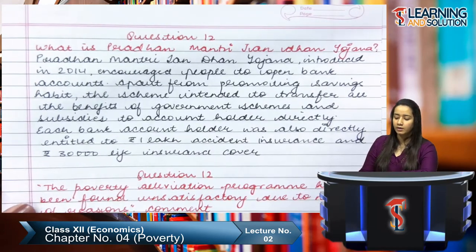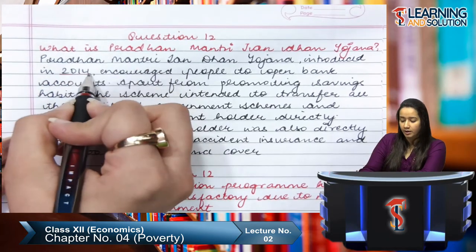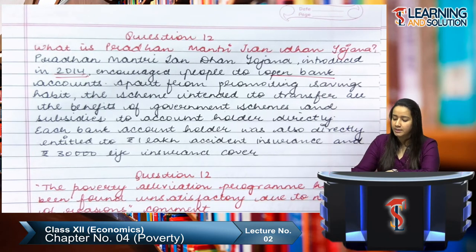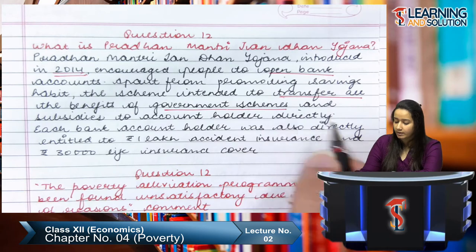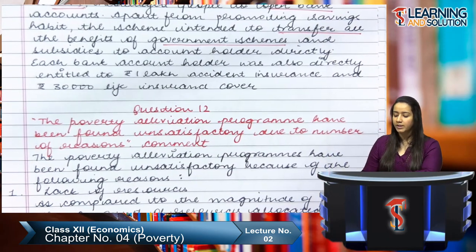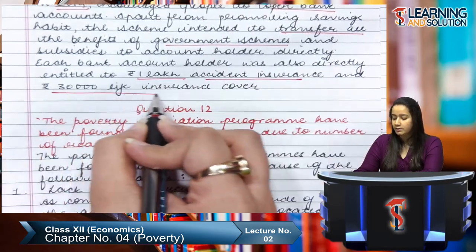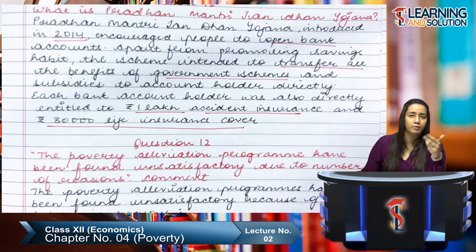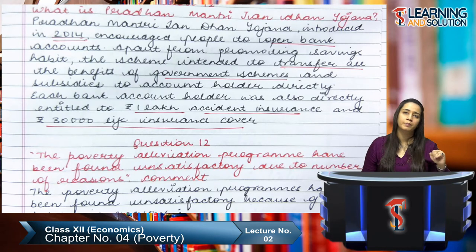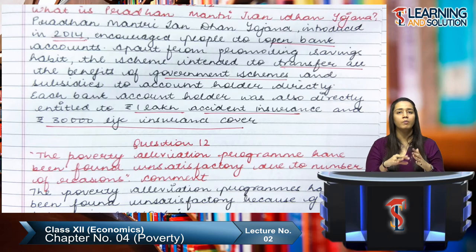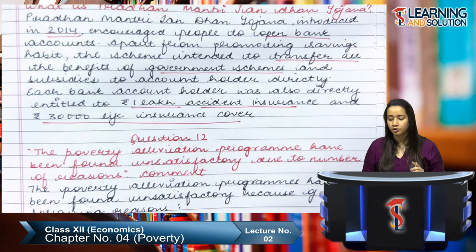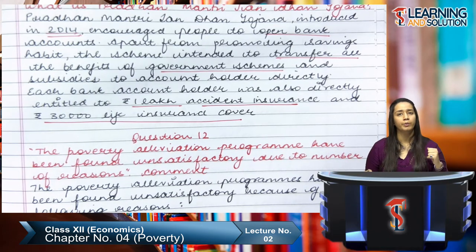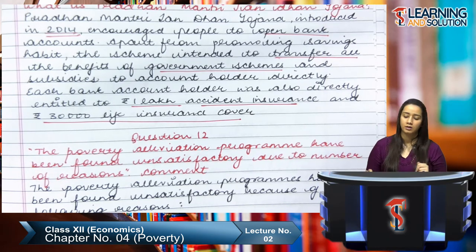Another program is Pradhan Mantri Jan Dhan Yojana, introduced in 2014. This encouraged people to open bank accounts. Apart from promoting saving habits, the scheme intended to transfer all benefits of government schemes and subsidies directly into accounts. Each bank account holder was also entitled to Rs. 1 lakh accidental insurance and Rs. 30,000 life insurance cover. This helped create a digital economy by eliminating intermediaries in benefit transfers.